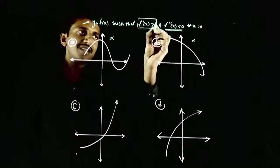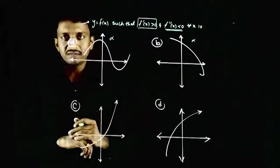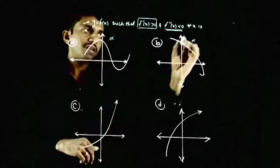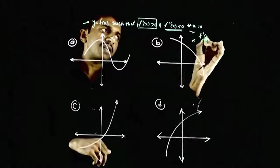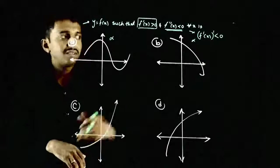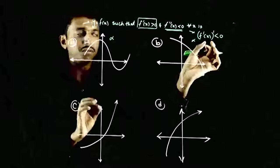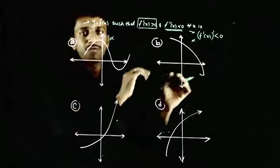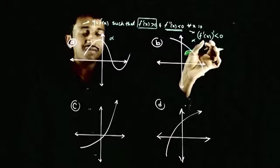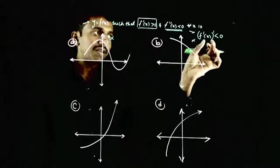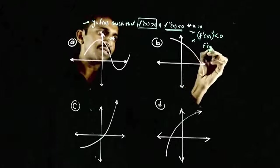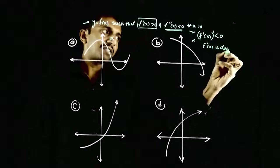f dash of x greater than zero is valid for both C and D. Next condition is f double dash of x is less than zero. Iska matlab hai, f dash of x ka whole dash is less than zero. Iska matlab hai, f dash of x ka value as we go forward, the value should decrease. That is, f dash of x is a decreasing function.